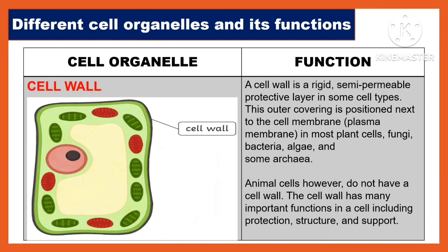Another cell organelle is the cell wall. A cell wall is a rigid, semipermeable, protective layer found in some cell types. This outer covering is positioned next to the cell membrane in most plant cells, fungi, bacteria, algae, and some archaea. Animal cells, however, do not have a cell wall. The cell wall has many important functions including protection, structure, and support.